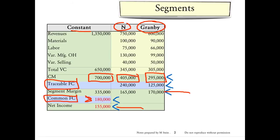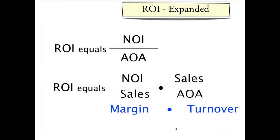One summary measure of divisional performance is return on investment. This is defined as net operating income divided by average operating assets. The point of a return on investment calculation is to determine how efficiently the assets available to a manager are being used.